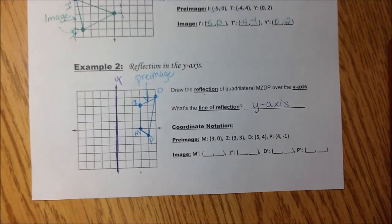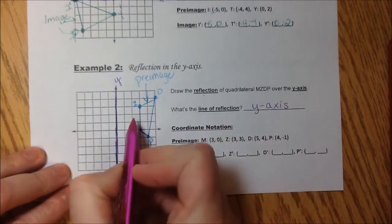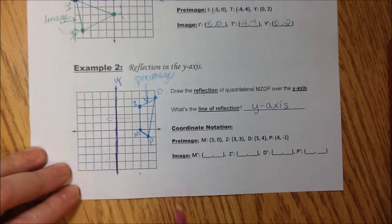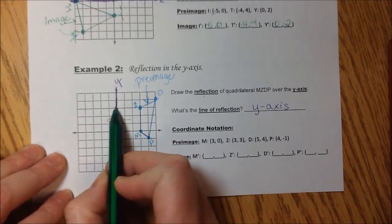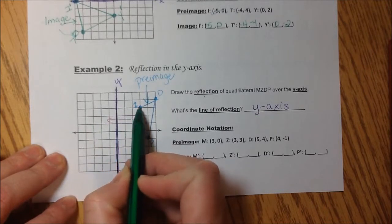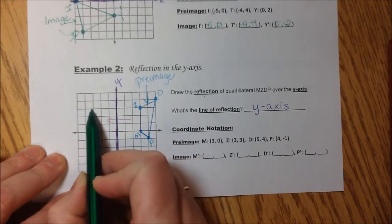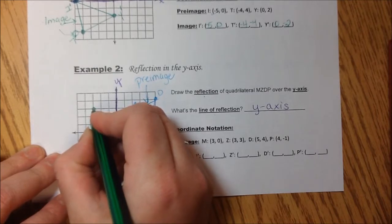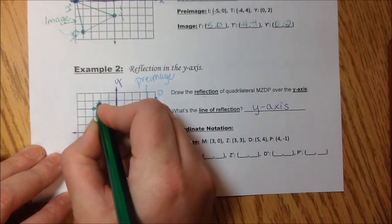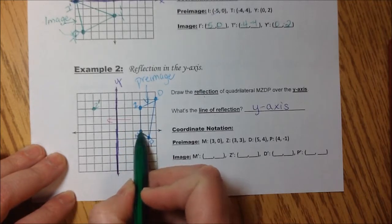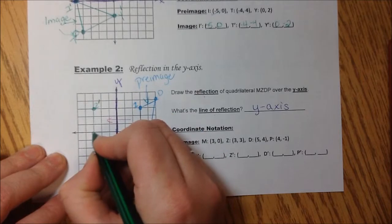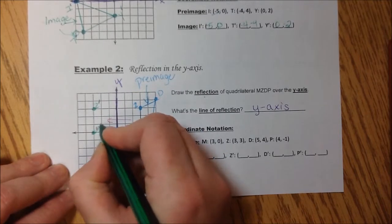Okay. So let's reflect it. It's going across this line. So it needs to be the same distance. So I went over 1, 2, 3. So I would go over 1, 2, 3. We're in green. And this would be my Z prime, because it's my image after the reflection. M, 1, 2, 3. 1, 2, 3. M prime.